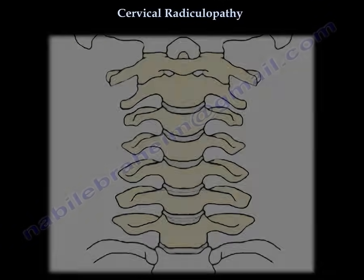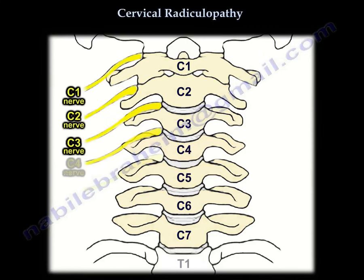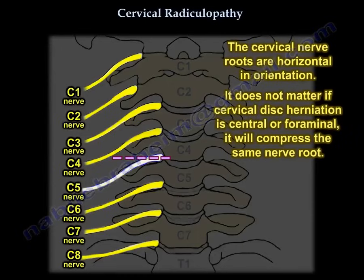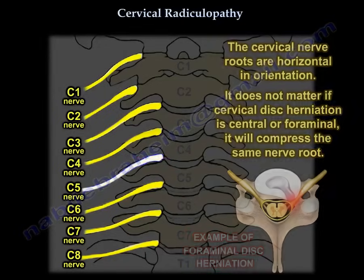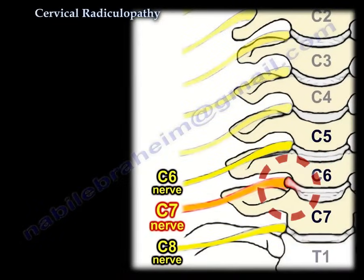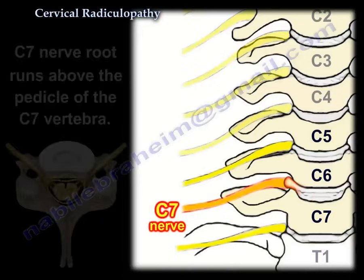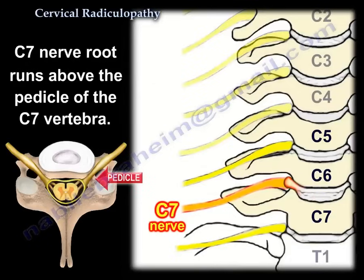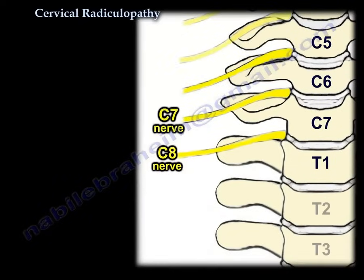The cervical spine has 7 vertebrae but 8 nerve roots. The cervical nerve root is horizontal in orientation, so it doesn't matter if the disc is central or foraminal — it will affect the same nerve root. At C6-C7, it will compress the C7 nerve root. This nerve root runs above the pedicle, so C7 runs above the C7 pedicle, C8 runs above the T1 pedicle, and T1 nerve root runs below the T1 pedicle.